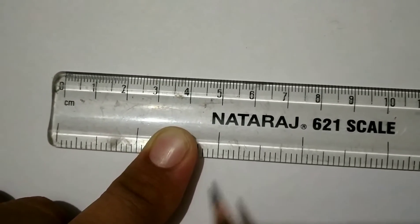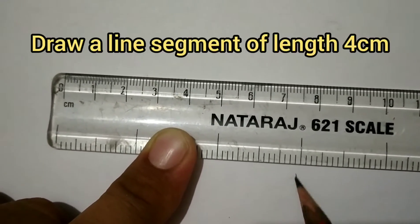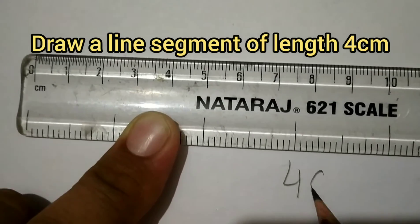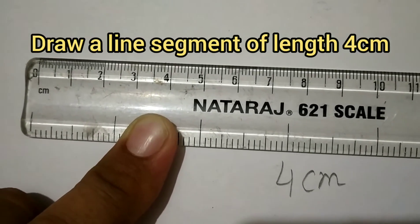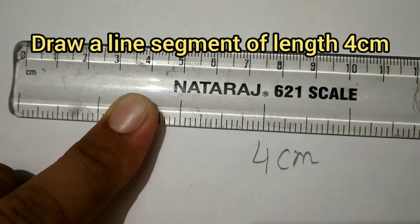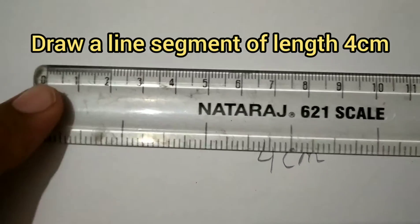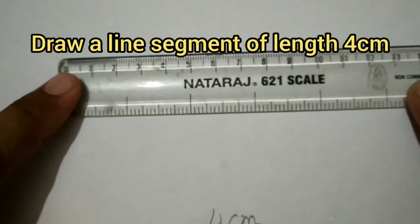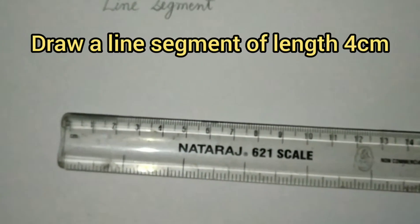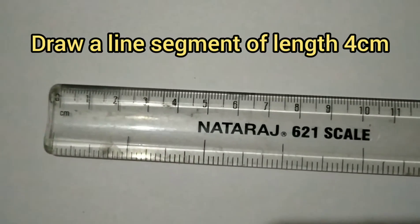Now let us learn how to draw a line segment measuring 4 centimeters. First, we will take the scale and put it on the paper where we want to draw the line segment.